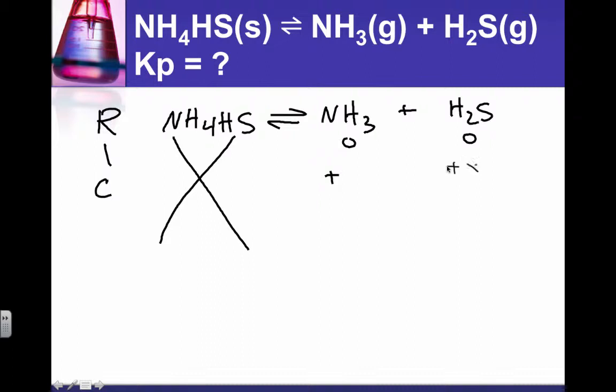But we know that we gained some ammonia and we gained some H2S. And then at equilibrium, we had X and X. And when we add X plus X together to get the total pressure, it was 0.659 atmospheres.